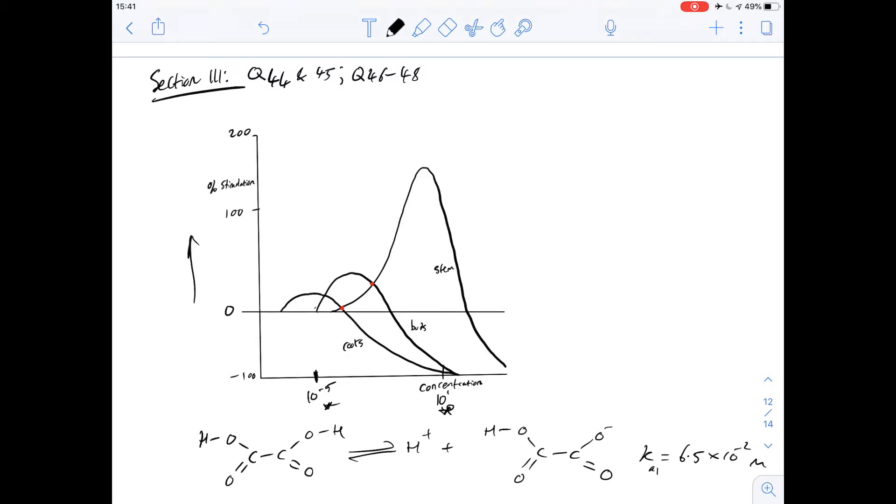So stimulation is measured here on the y-axis and we're just looking to see where the lines cross over. For A it says there are two auxin concentrations at which stem and bud stimulation are equal to each other. So that's where the lines are going to cross and we can see there's only one here, those lines only cross once so it's not going to be A.